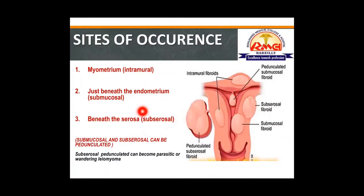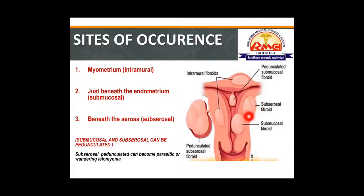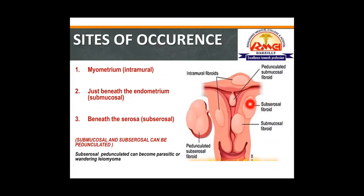The third category is subserosal fibroids, seen just beneath the serosa or perimetrium. Like submucosal fibroids, subserosal fibroids can also be either sessile (without a stalk) or pedunculated (with a stalk).